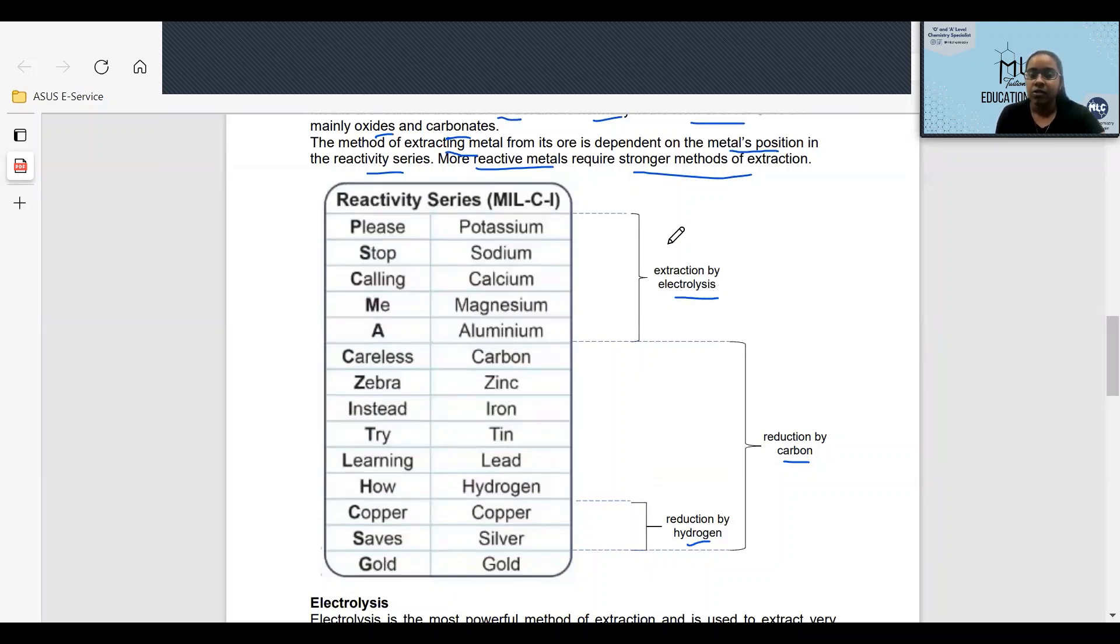So you need to know based on the reactivity series, which metals can be extracted by electrolysis, carbon, and hydrogen respectively.